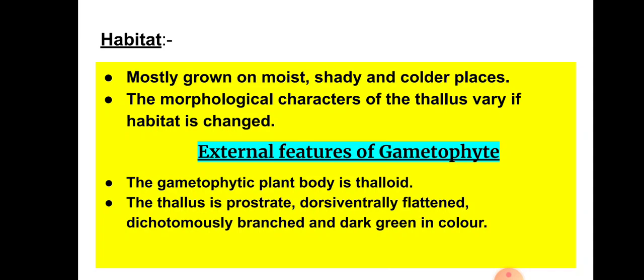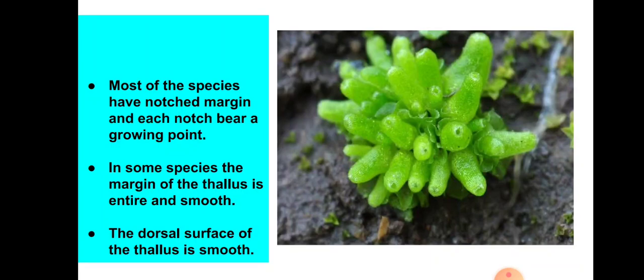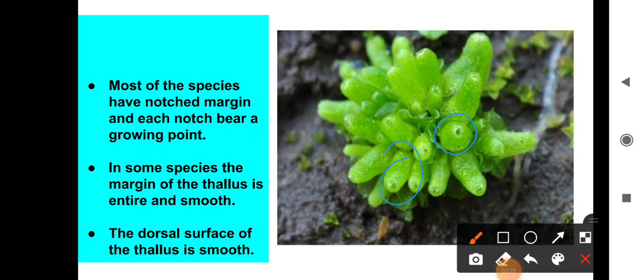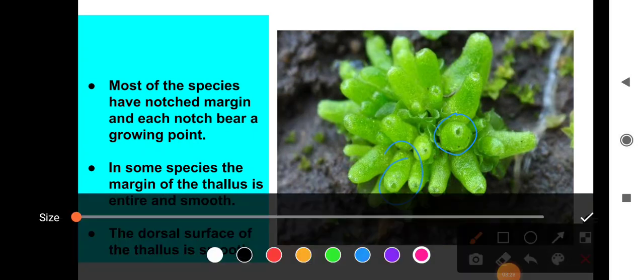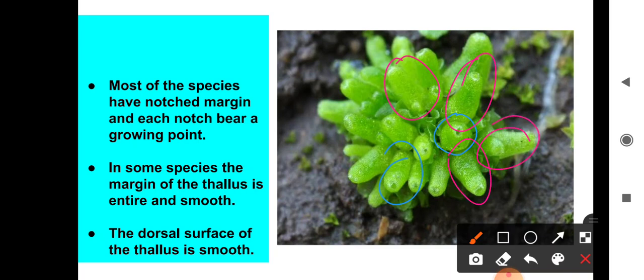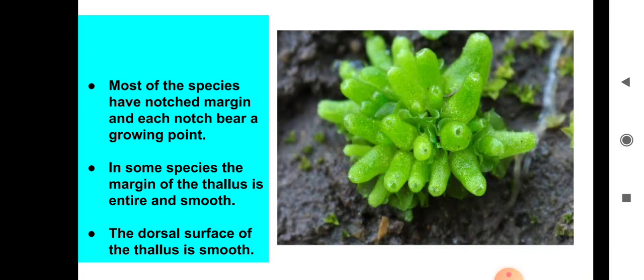Regarding the external features of the gametophyte: the gametophytic plant is thalloid, with a prostrate, dorsiventrally flattened, dichotomously branched, and dark green thallus. On the thallus you can see flask-shaped structures — these are the flask-shaped involucres that enclose the sex organs.